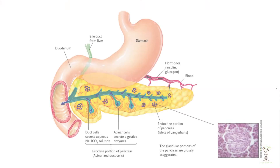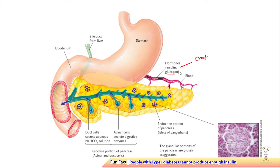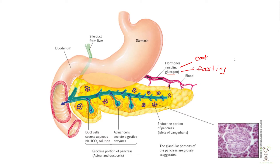When the pancreas is producing hormones, the two main hormones it produces are insulin and glucagon. We make insulin when we're eating food and our blood sugar increases, and we make glucagon when we're fasting and our blood sugar goes down. Insulin helps our blood sugar go down, and glucagon helps our blood sugar go up.